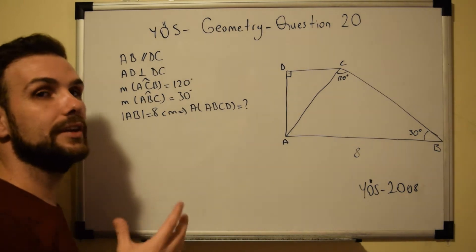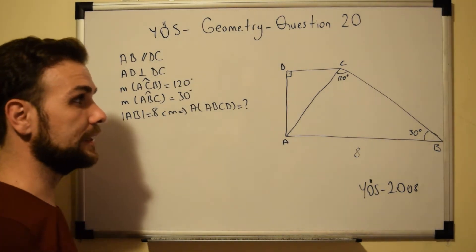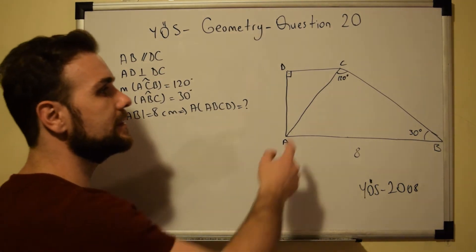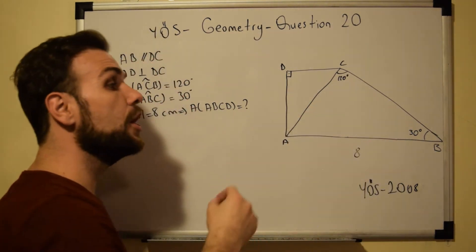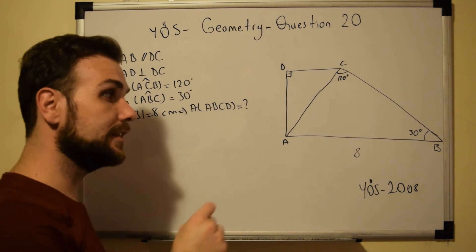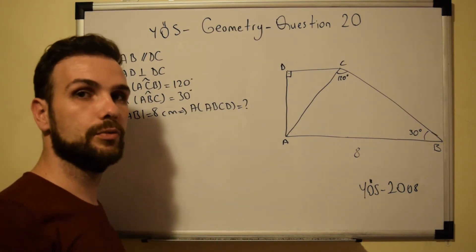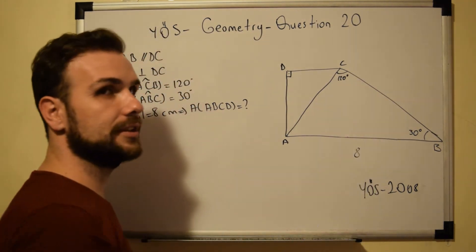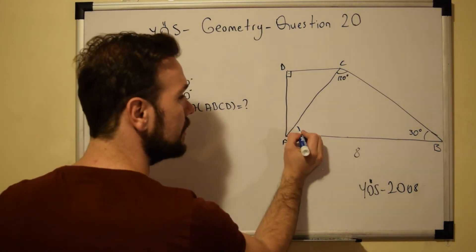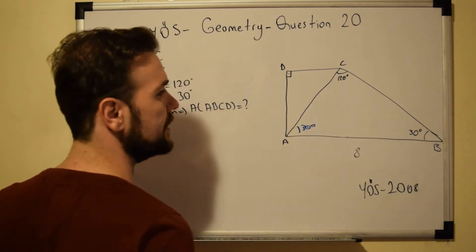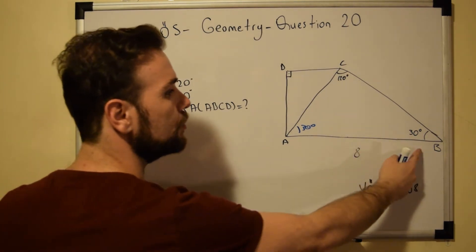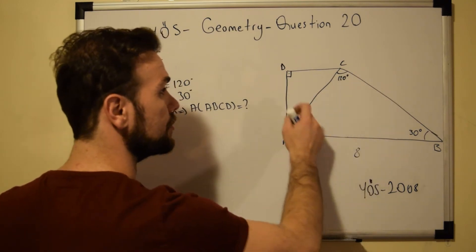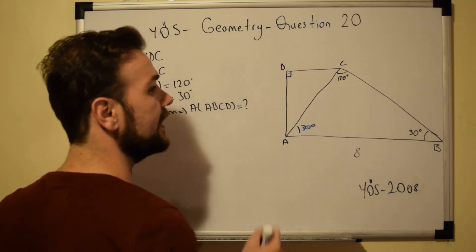To find the height, we look at the triangle. We see that one angle is 120 degrees and another is 30 degrees. Knowing that all interior angles of a triangle sum to 180, and these two sum to 150, the third angle is equal to 30 degrees. We now have two equal angles, which means the two corresponding sides are also equal to each other.